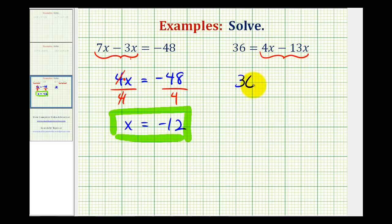So we'll have 36 equals 4x minus 13x. Well 4x minus 13x is the same as 4x plus negative 13x, if that helps. Either way this simplifies to negative 9x.